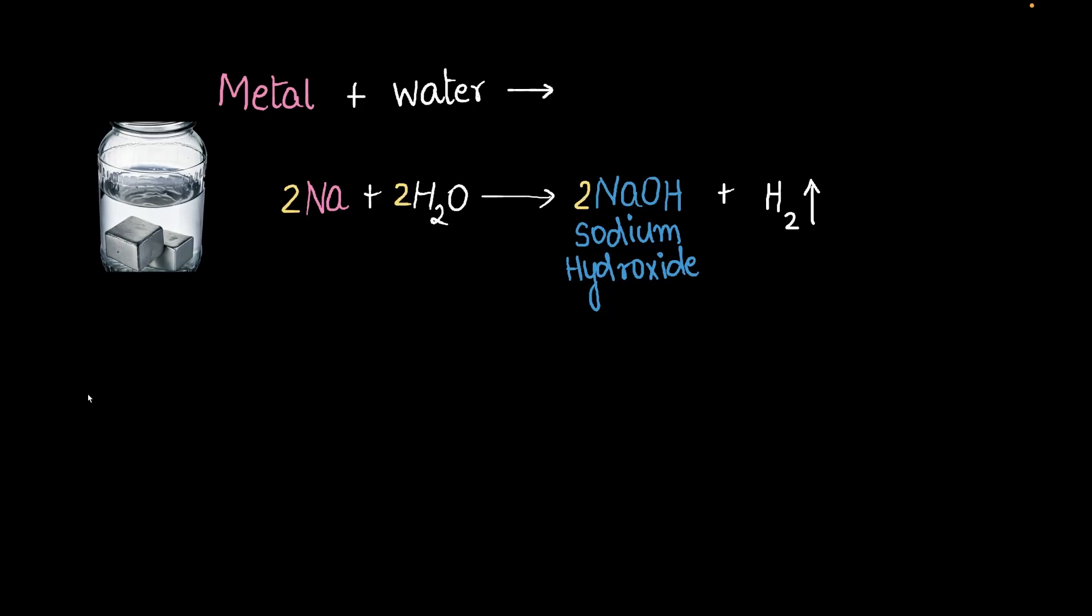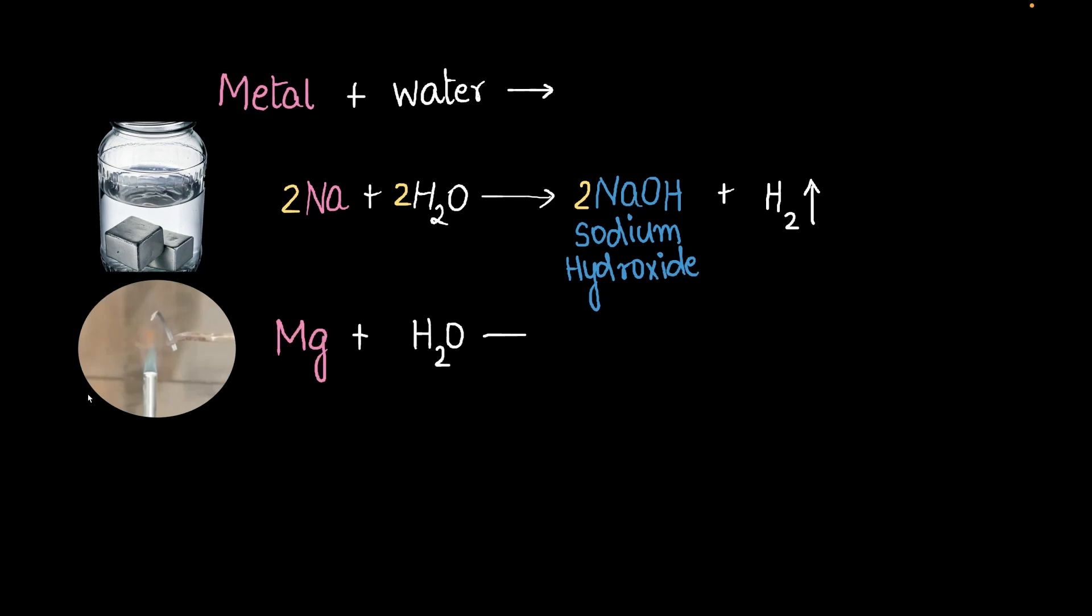Our next example is magnesium. Magnesium plus water produces Mg(OH)₂ plus hydrogen gas. That is magnesium hydroxide. Yes, it's a base. But there is a small catch in this equation. Magnesium does not react with water at room temperature. Magnesium reacts with hot water. So this entire thing needs to be heated up for this reaction to actually take place.